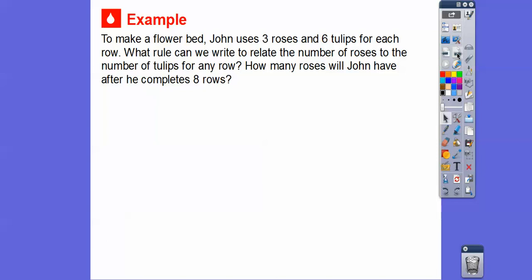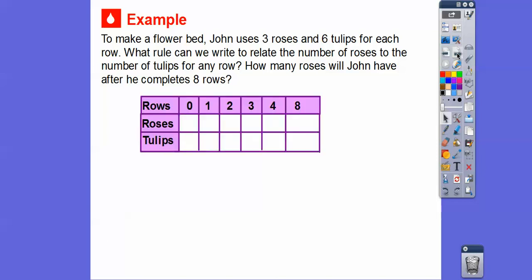Let's try another one. To make a flower bed, John uses three roses and six tulips for each row. What rule can we write to relate the number of roses to the number of tulips for any row? How many roses will John have after he completes eight rows? Let's set up a table. In row zero there are no flowers. After one row there are three roses and six tulips.